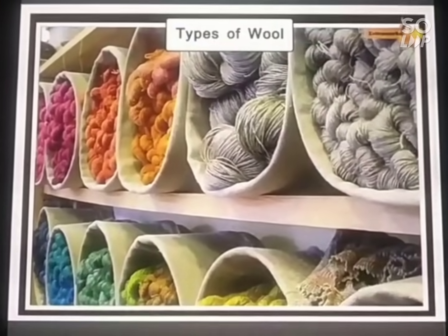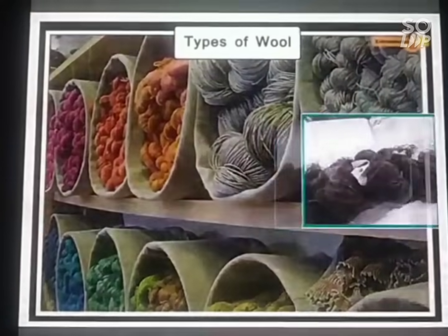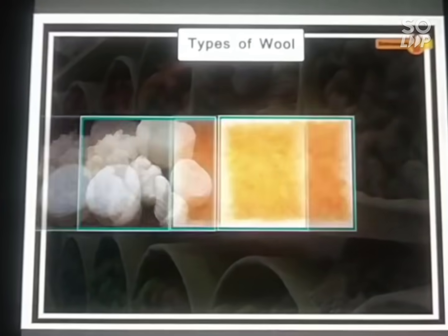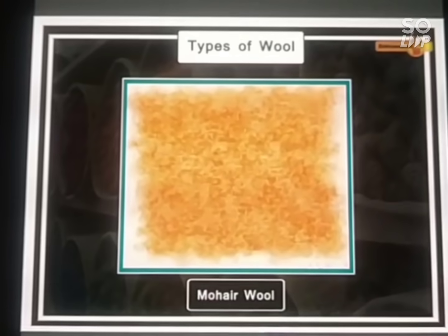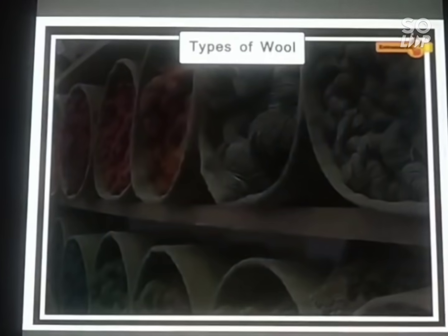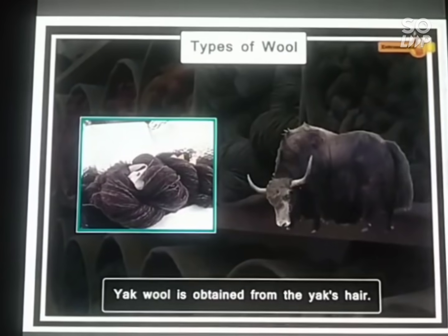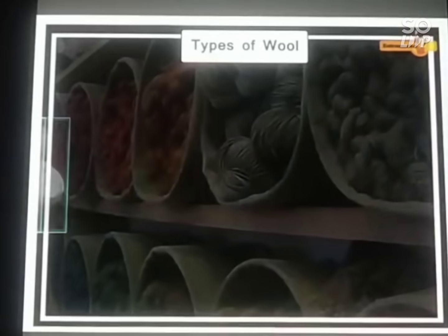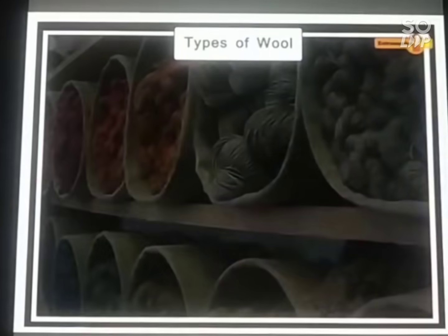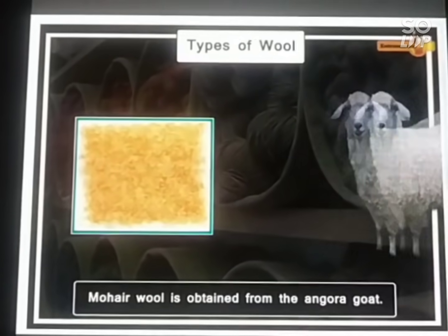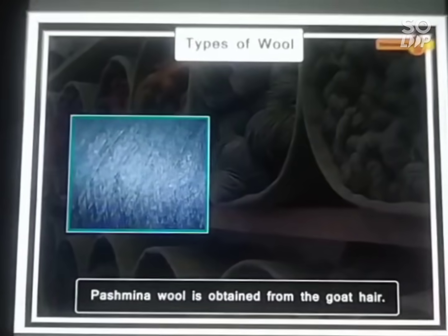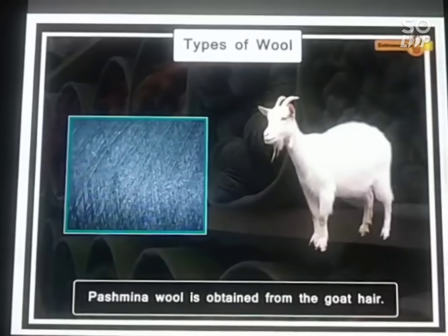Different animals yield different varieties of wool. Yak wool is obtained from the yak's hair. Angora wool is obtained from the angora rabbit. Mohair wool is obtained from the angora goat. Pashmina wool is obtained from goat hair.